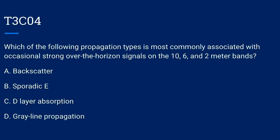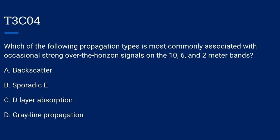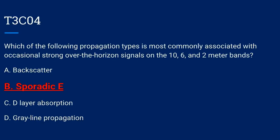T3C04. Which of the following propagation types is most commonly associated with occasional strong over-the-horizon signals on the 10, 6, and 2-meter bands? A. Backscatter. B. Sporadic E. C. D layer absorption. Or D. Grayline propagation. The correct answer is B: sporadic E.